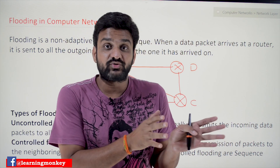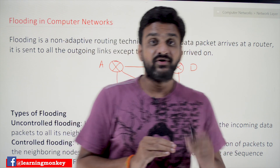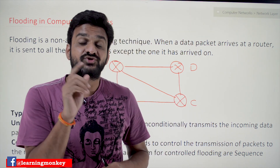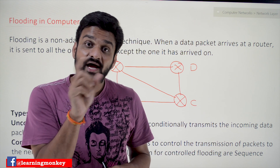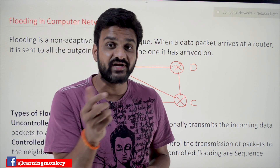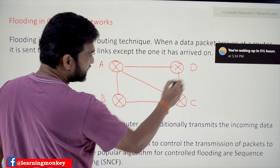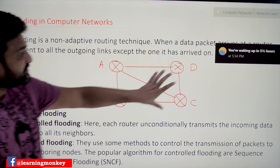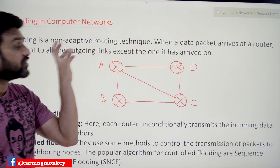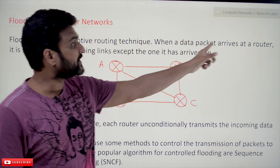The distance vector routing technique we have discussed is an adaptive routing technique. Adaptive routing means whenever there is a failure in the network, or whenever a new system joins the network, the new router and its distances will get adapted by that network. For example, if a link has failed, immediately the affected routers will adapt to the change. But flooding is not an adaptive routing technique.